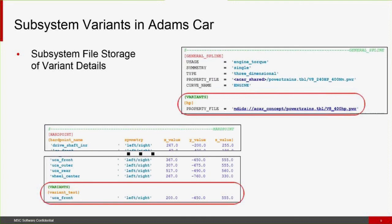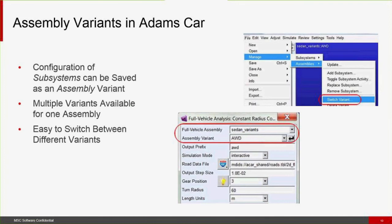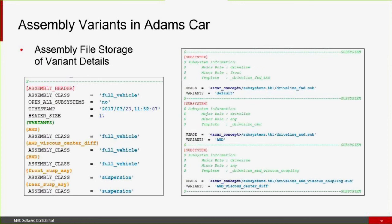For example, a high performance variant might have a different property file for the engine torque spline. At the assembly level, we think of variants as a configuration of subsystems that can be saved as an assembly variant — multiple variants available in a single assembly. I can have one assembly with differing collections of subsystems, and various combinations define the variants. All standard event dialogs have been updated to allow specifying which variant of the assembly to run, with clear designations in the assembly file of which variants each subsystem applies to.